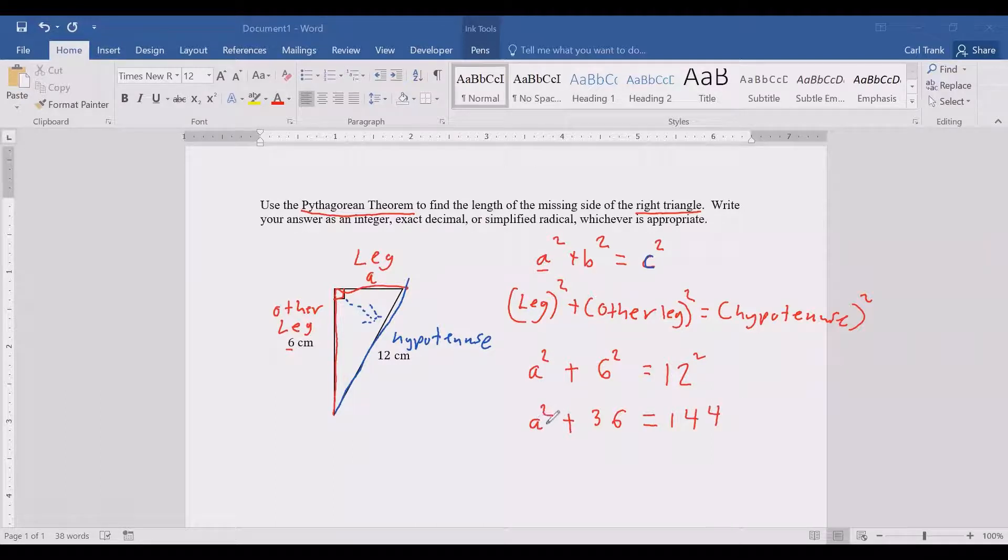Our goal is to find A, get A by itself. To do that we are going to start by subtracting 36 from both sides of the equation which will leave us with A squared equals 108. And now to get A by itself we are going to take a square root of both sides of the equation.